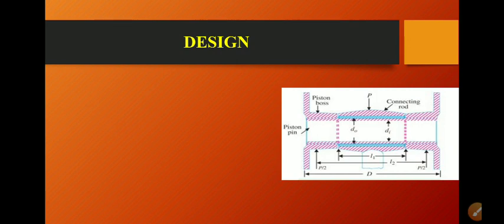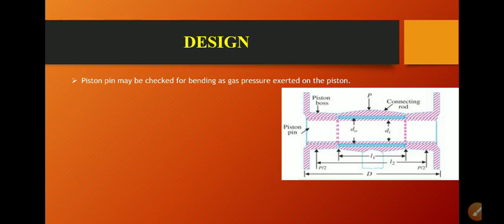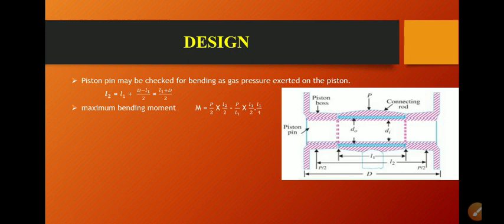If the force P is exerted on the top surface of the piston or connecting rod, with lengths L1 and L2 as denoted in the figure, the pressure is distributed on all surfaces. L2 is equal to L1 plus (D minus L1) divided by 2, which equals L1 plus DP divided by 2. For the maximum bending moment produced on the piston pin, capital M is equal to P divided by 2 times L2 divided by 2, minus P divided by L1 times L1 divided by 2 times L1 divided by 4. Solving this equation gives M equal to P times D divided by 8.